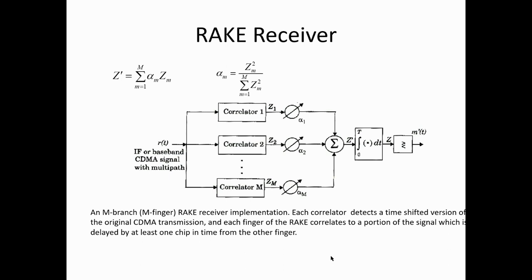Welcome to the wireless communication lecture module. In this session we are going to discuss the RAKE receiver. Due to reflection, refraction, and diffraction, the components of a signal travel along different paths and reach the destination at different time delays. The received signal will vary in amplitude, phase, and time delay. This effect is called the multipath effect.